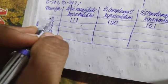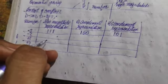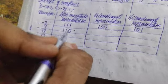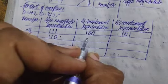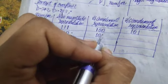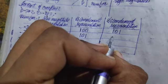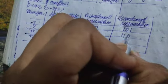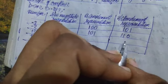For minus two, its sign magnitude representation is one one zero. And for two's complement it is going to be one one zero.